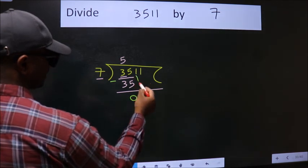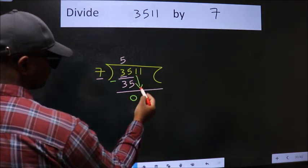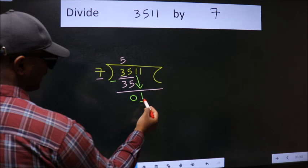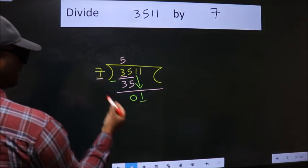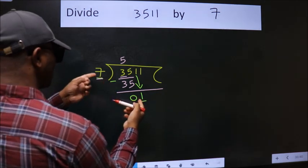After this, bring down the beside number. So 1 down. Here we have 1, here 7. 1 is smaller than 7.